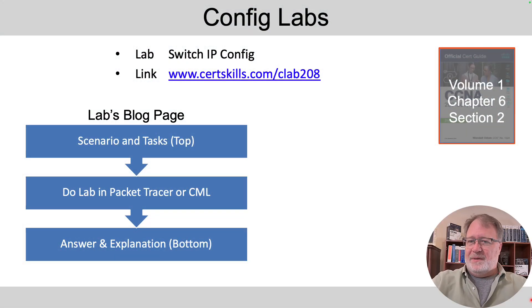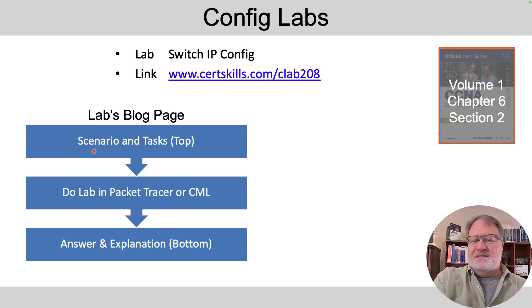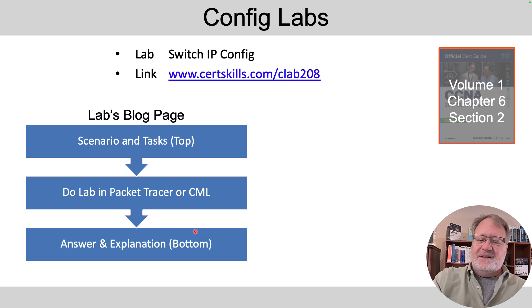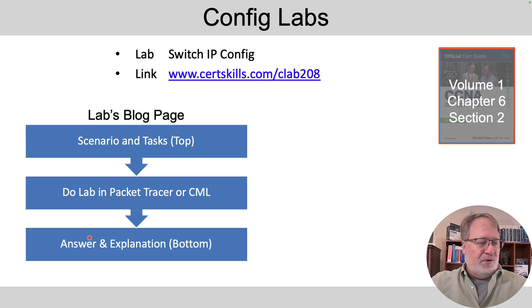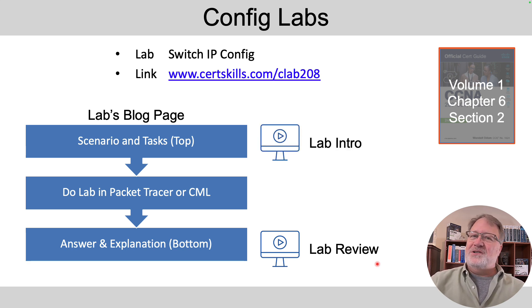This video describes one of the config labs at my blog. The title is Switch IP Config. You can do these labs without using this video or the review video — you go to that link, it opens a web page, and the top half is the scenario and tasks. Then in the middle it says go do the lab. You can do the lab on paper, in Cisco Packet Tracer, or in CML. The bottom half of the page is the answer and an explanation as to why that answer meets the goals of the lab. So use the blog page alone if you want, but to give you a deeper look, you can use the lab review video, this lab intro video, or both. This lab intro video works through the top half of the page in a little more depth.